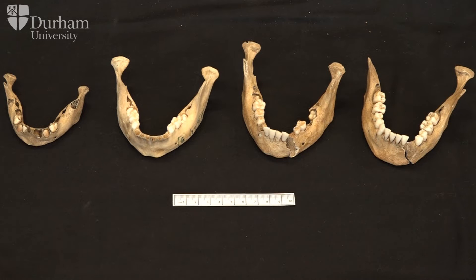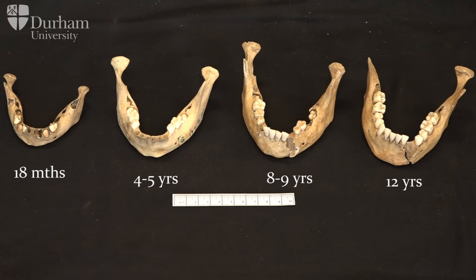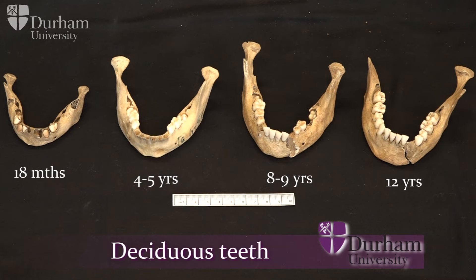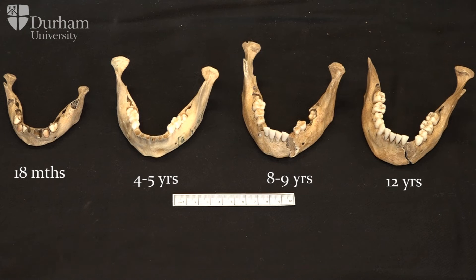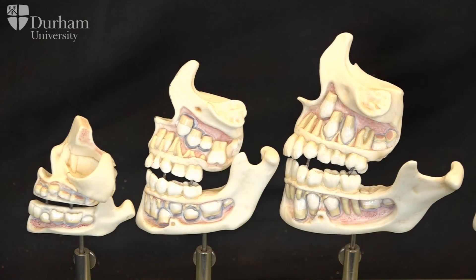There are four lower jaws here, each showing a different stage of dental development going from 18 months of age, to approximately four to five years, to about eight to nine years of age. Starting at 18 months: the deciduous teeth start to erupt at about six months of age and are fully erupted by two years of age. There are 20 deciduous teeth in total, and these are gradually replaced by the permanent teeth, of which there are 32 in total.